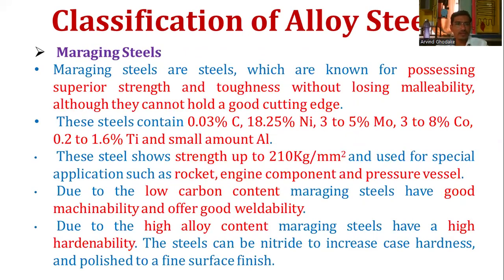The next classification is maraging steel. These steels possess superior strength and toughness without losing malleability, although they cannot hold a good cutting edge. They contain 0.03 percent carbon, 18 to 25 percent nickel, 3 to 5 percent molybdenum, 3 to 8 percent cobalt, 0.2 to 1.6 percent titanium, and a small amount of aluminum. These steels show strength up to 210 kg per mm squared and are used for special applications such as rocket engine components and pressure vessels.